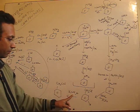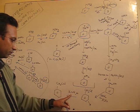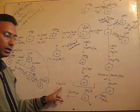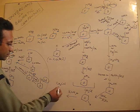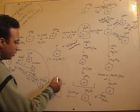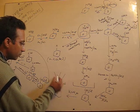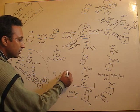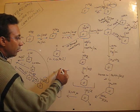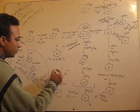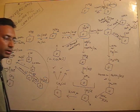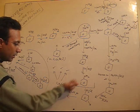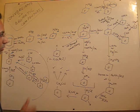Benzyl chloride, when heated with potassium cyanide, gives benzyl cyanide. From benzyl cyanide, you can enter into carboxylic acid, aldehydes, amines, and amides — you can increase the depth of the chain in this way.